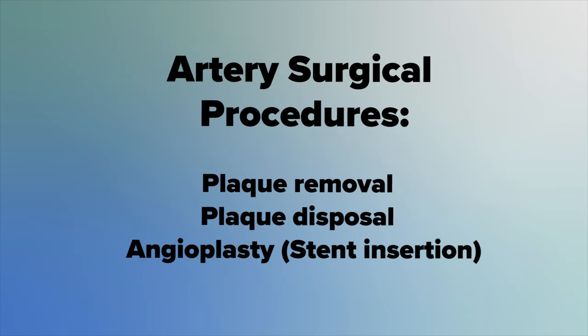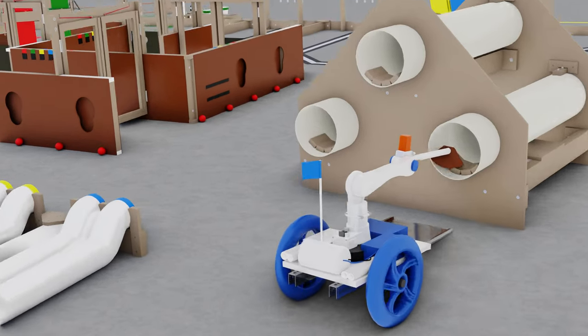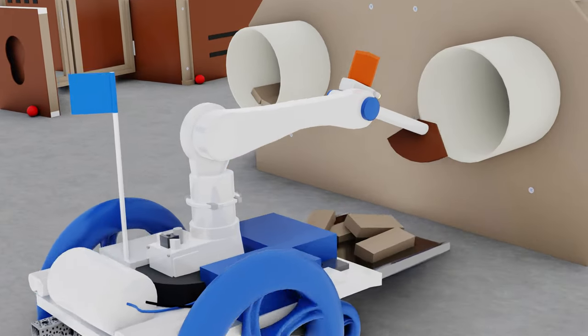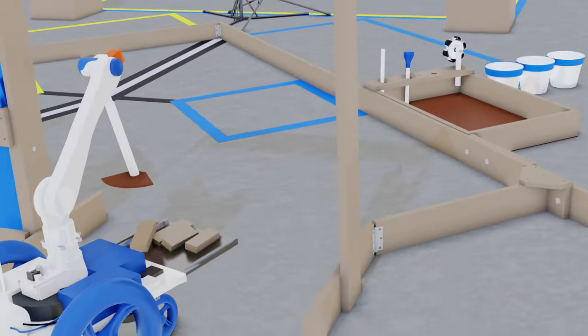Artery surgical procedures: using the rake tool, you can perform the plaque removal procedure. During plaque removal, the plaque must be somewhere on the robot.